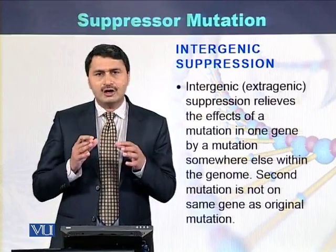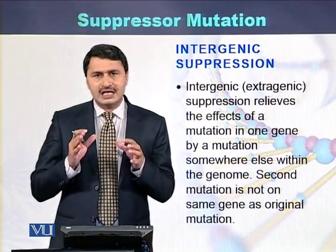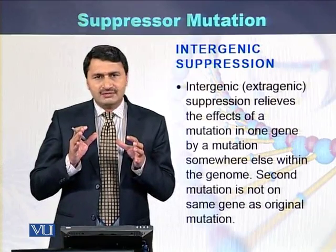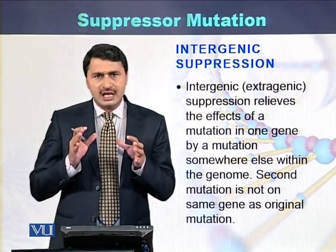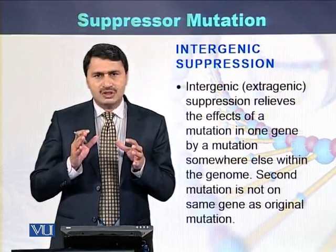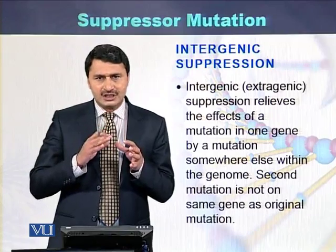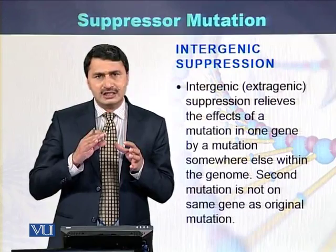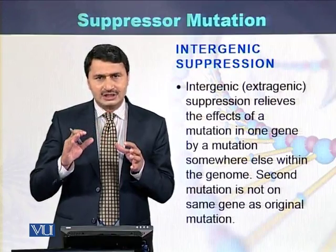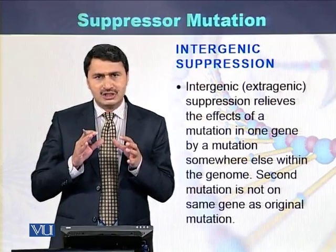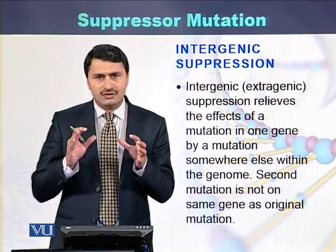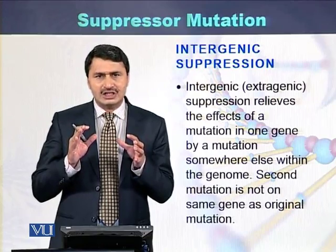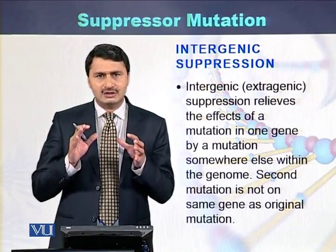Intergenic suppression is a phenomenon where two mutations are present and one mutation is in one gene while the second mutation is in another gene. If two mutations are present in two different genes, that is called intergenic suppression.